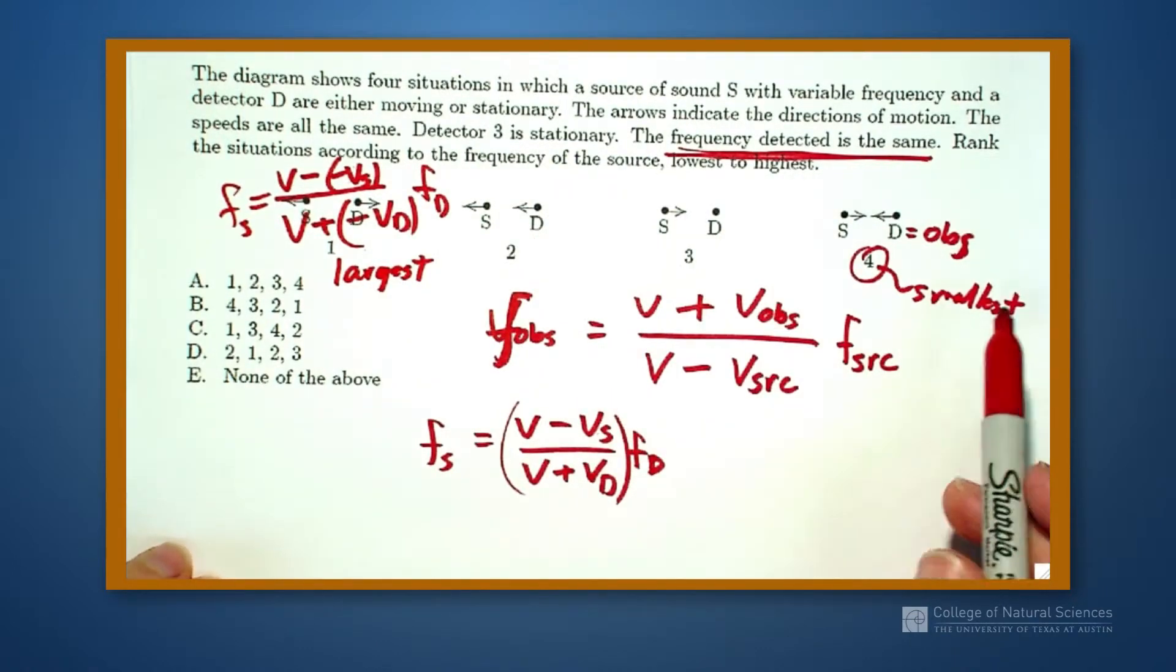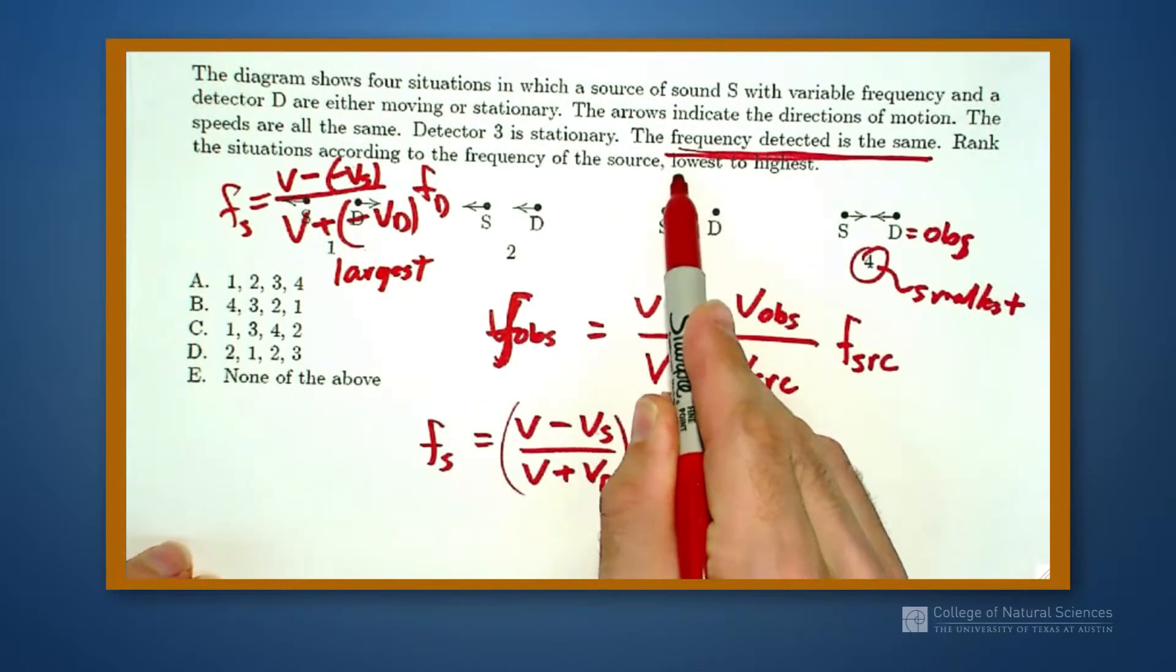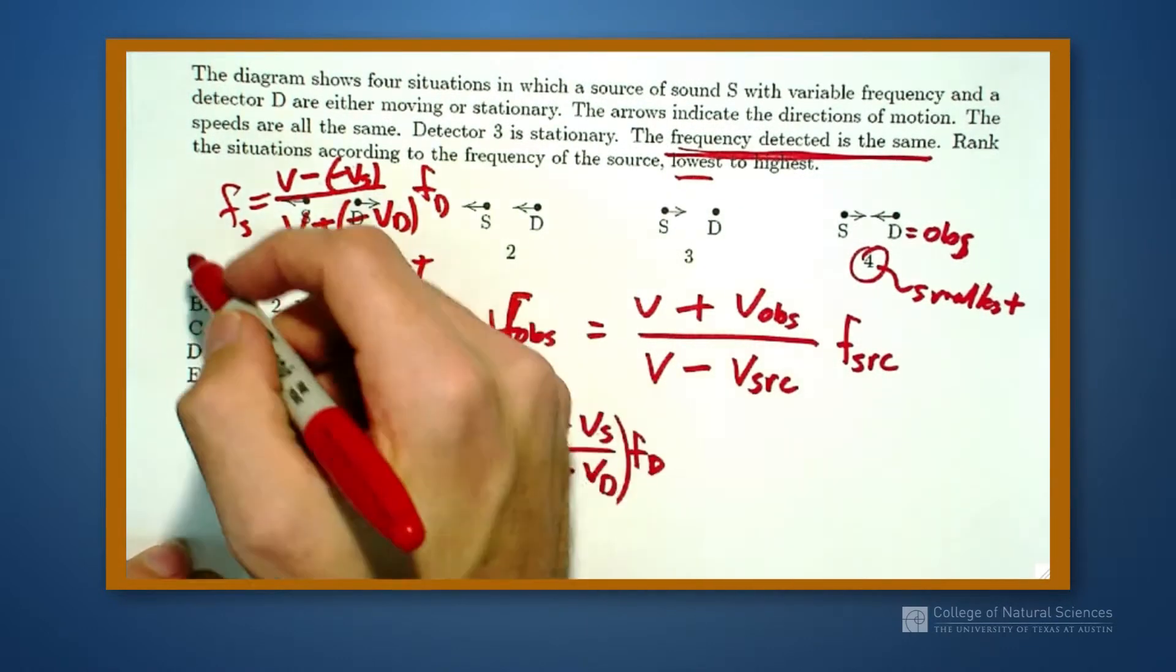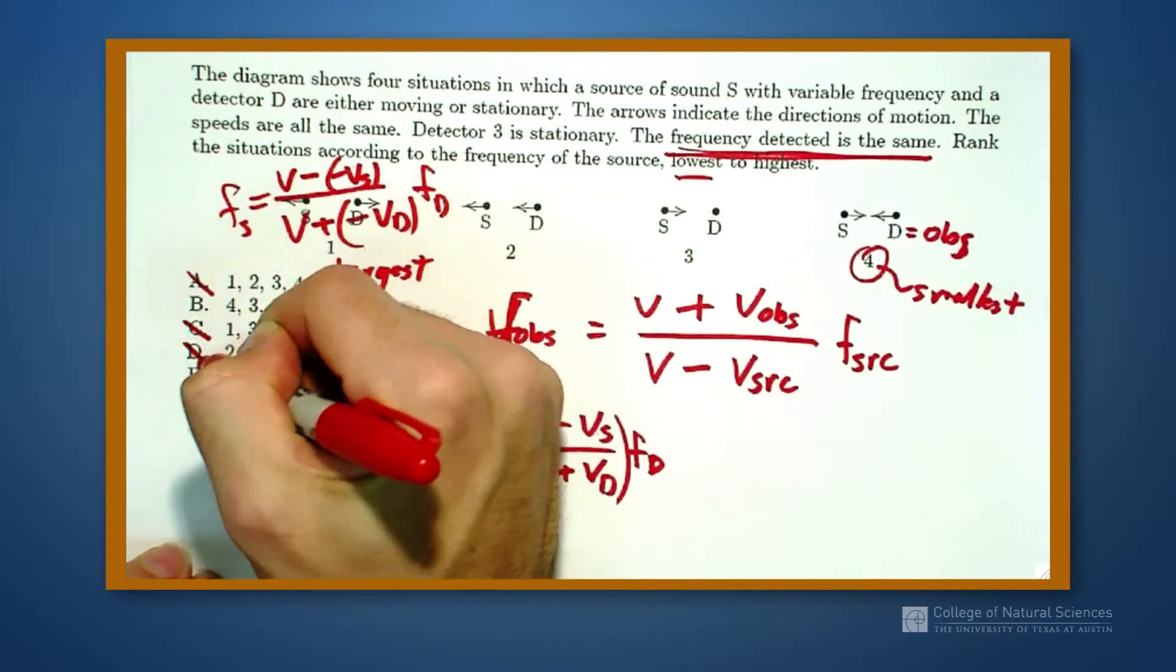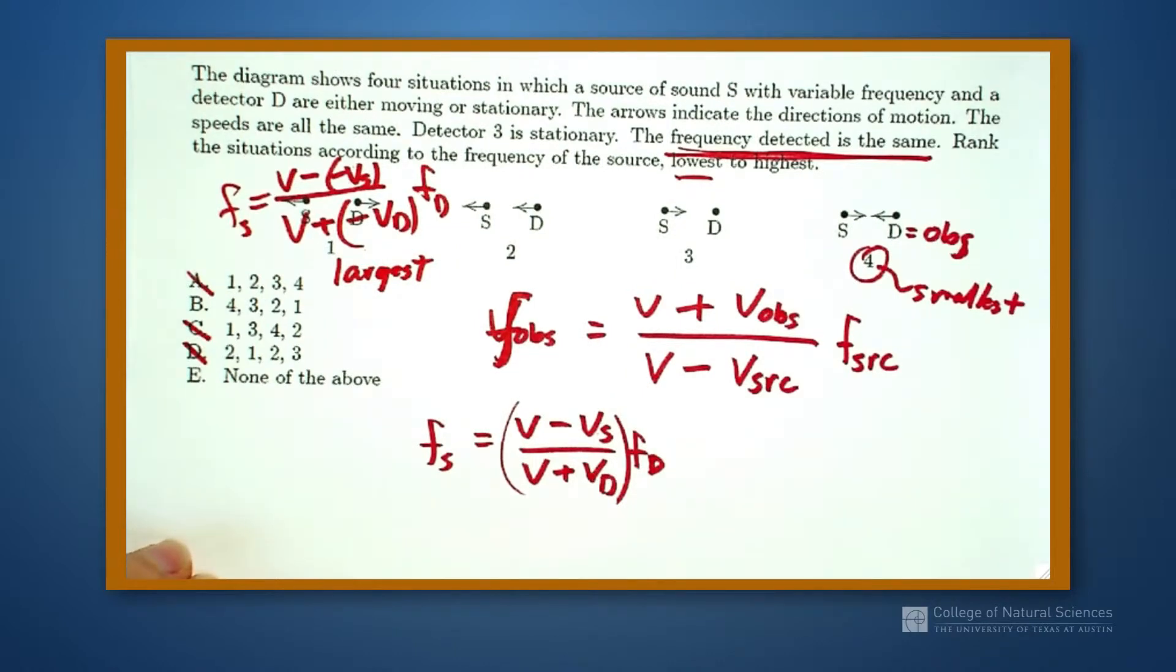So let's see if I've eliminated some choices. I know that 4 is my smallest, my lowest frequency, so 4 has to be in the first spot. And now I have to check to see what are the cases in the middle. So 4 is my smallest frequency.